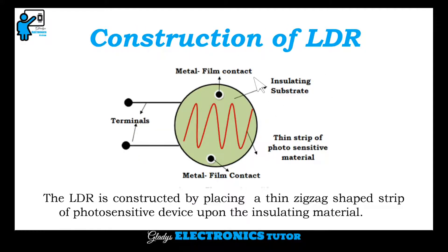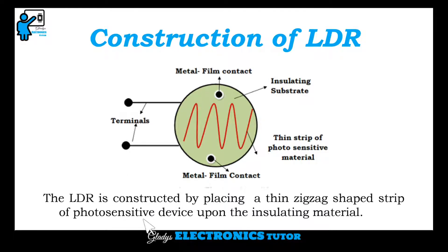This is the construction of LDR. This is the metal film contact, this is the insulating substrate, and this is the thin strip of photosensitive material, and these are the terminals. The LDR is constructed by placing a thin zigzag-shaped strip of photosensitive material upon the insulating material.